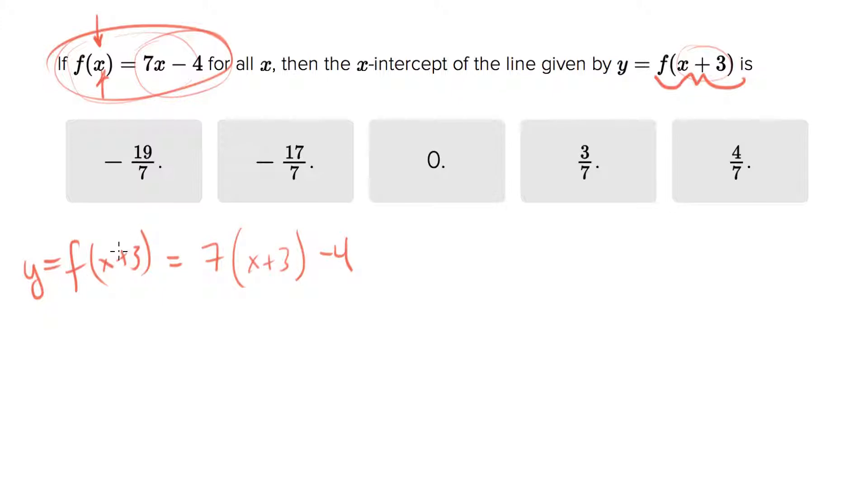Usually they're asking for y-intercept. This time they ask for x-intercept, which is kind of interesting. So x-intercept will be found when the y-coordinate is 0.